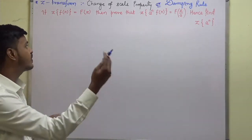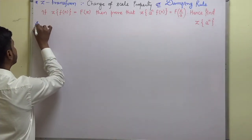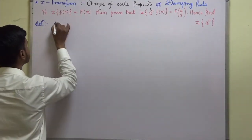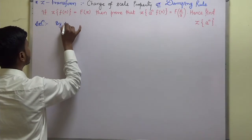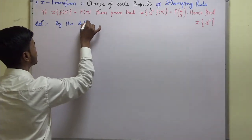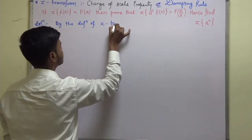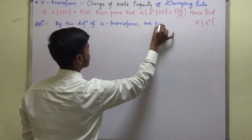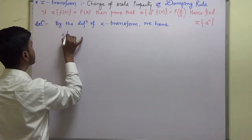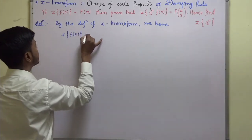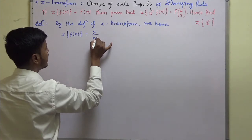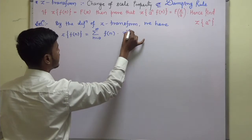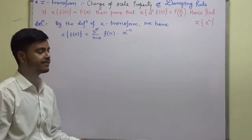So how are we going to start? We are going to start with the definition. By the definition of Z-transform, we have: Z-transform of f(n) is equal to summation from n equals zero to infinity of f(n) into z to the power minus n. That is the definition.